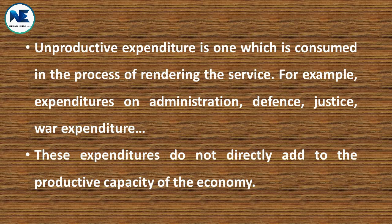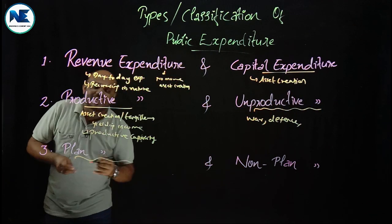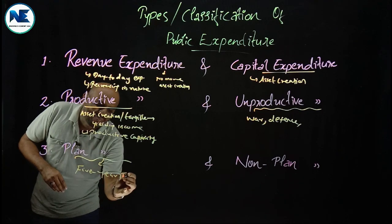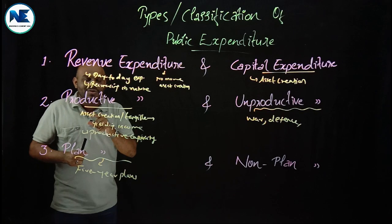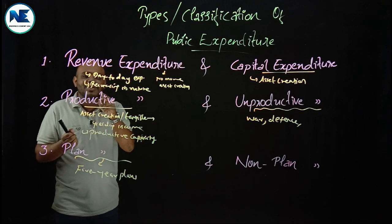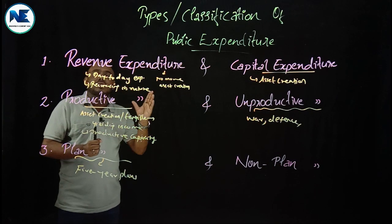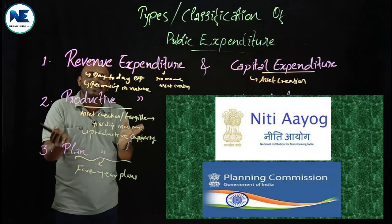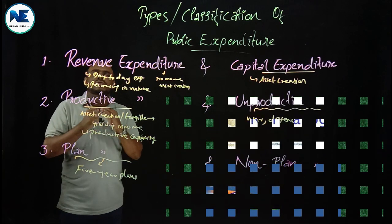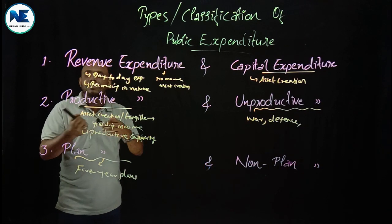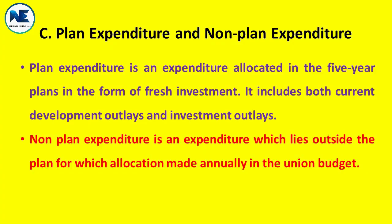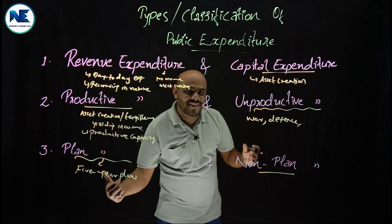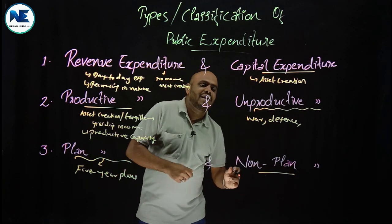The next type is plan expenditure. Plan expenditure refers to all those expenditures that come under the Five Year Plans of the country. India's Five Year Plans ran from 1951 to 2017, starting with the First Five Year Plan from 1951 to 1956, and ending with the Twelfth Five Year Plan from 2012 to 2017. Plan expenditure includes productive expenses and all other long-term expenditures under the Five Year Plans.